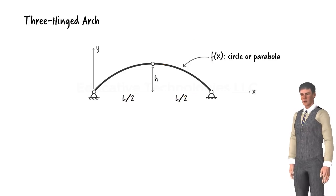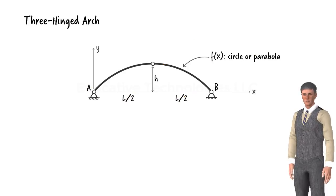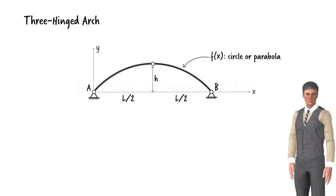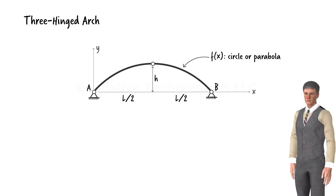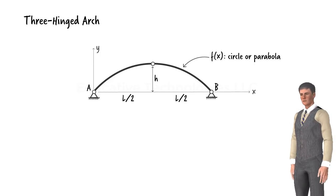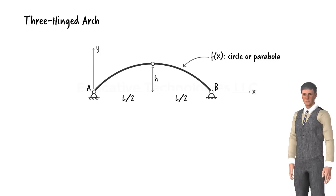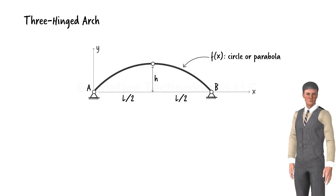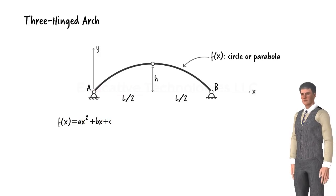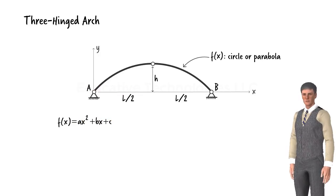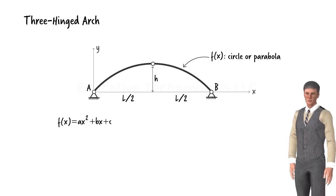Let's refer to the height of the arch as h and use l to label the horizontal distance between the two supports. Suppose we wish to describe the shape of our arch using a parabolic function. We start with a general quadratic equation like this. Our task is to determine the coefficients a, b, and c in terms of h and l.